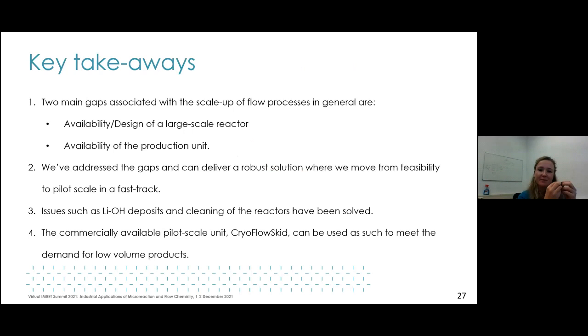We monitor fouling always by delta P. We always allow certain delta P and if that's reached we flush with water to dissolve lithium hydroxide deposits. Once flushed we flush the system with dry solvent to go back into production mode. Here you can see how system purge takes place.